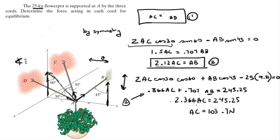You can plug this into equation 2 and you get that, you also know that AD, you plug that into equation 1 and you know that AD is the same, 103.7 Newtons. And AB, by plugging it into equation 2, you get that AB equals 219.75 Newtons.